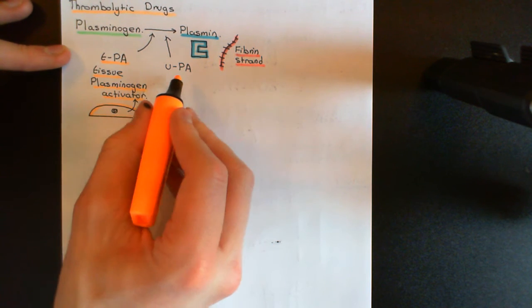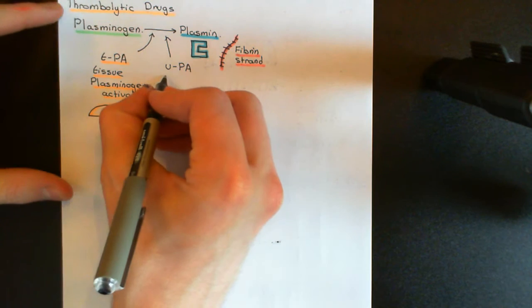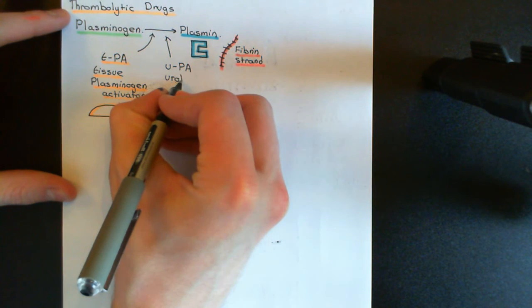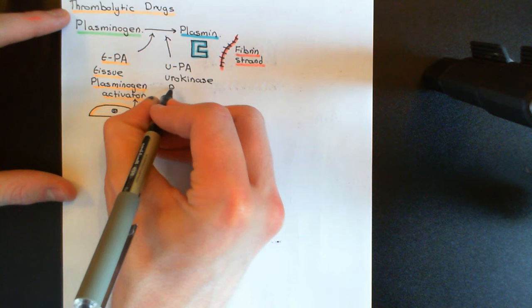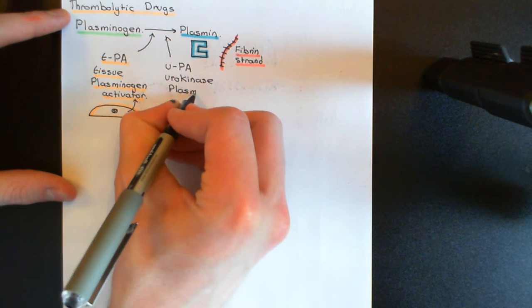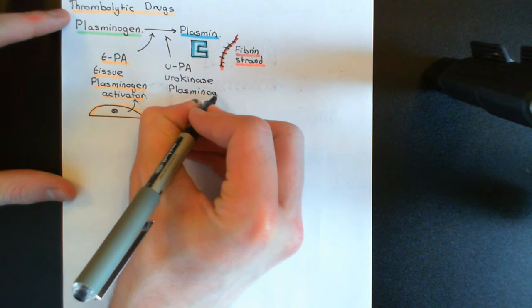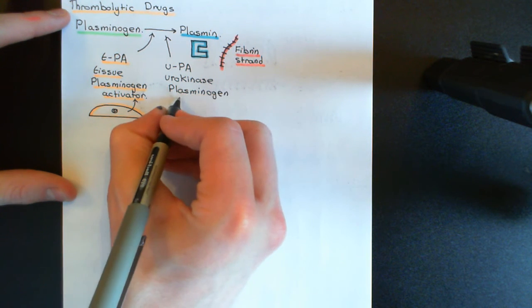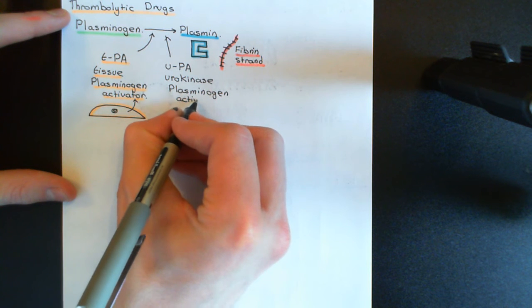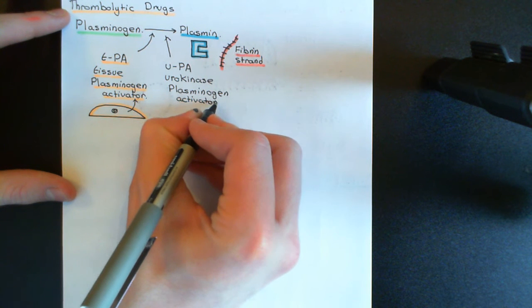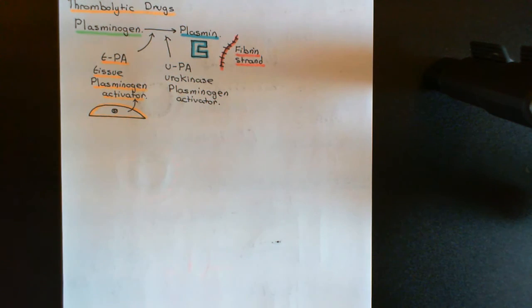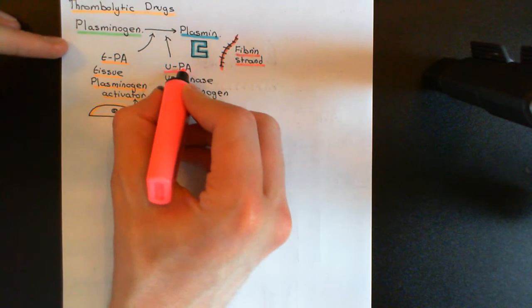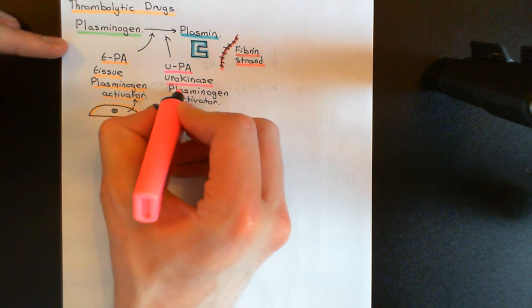The other mechanism involves urokinase plasminogen activator, and again this involves endothelial cells. Urokinase plasminogen activator — often abbreviated to UPA — is an enzyme that is released by the liver rather than endothelial cells. However, it's not active on its own; it circulates within the blood but is not activating plasminogen to plasmin on its own.